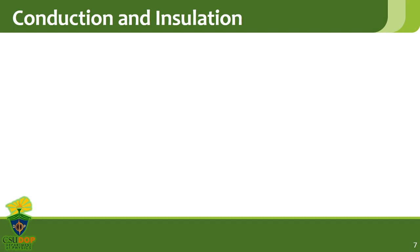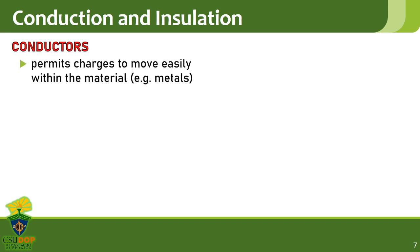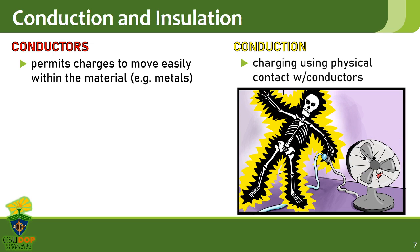There are three basic ways to charge an object. We mentioned the first one used by ancient Greeks, which is charging by rubbing. The next charging processes will depend on the type of material used. Conductors allow the easy flow of charges within them. Most conductors are metals such as iron or copper, but liquids can also be conductors. The charging process involving conductors is called conduction. When you get electrocuted, you are actually charged by the process of conduction. Charging your smartphone, or any electrical or electronic devices, are also done using conduction.